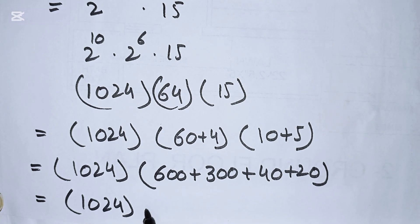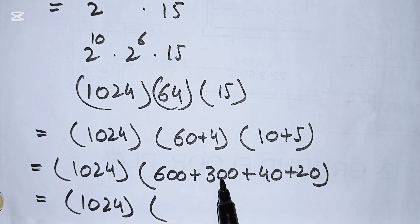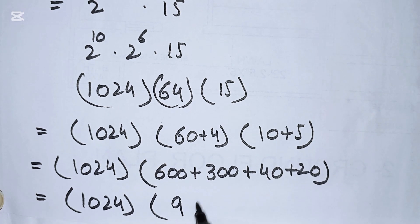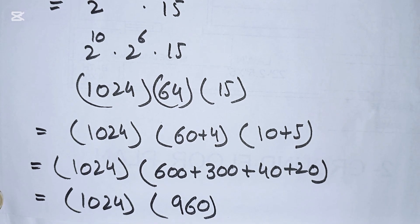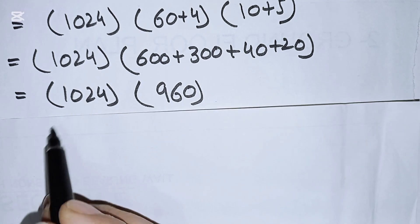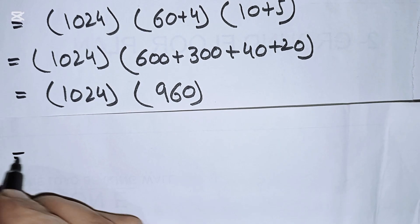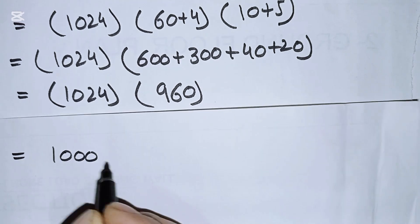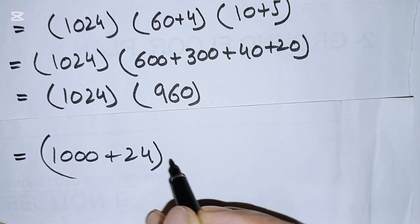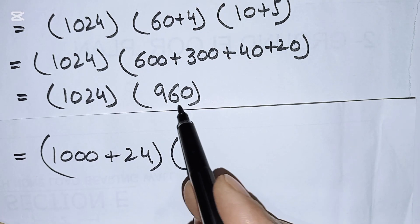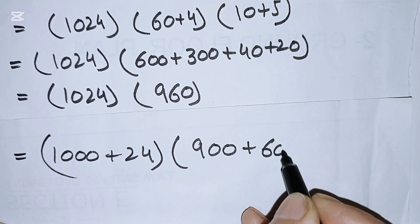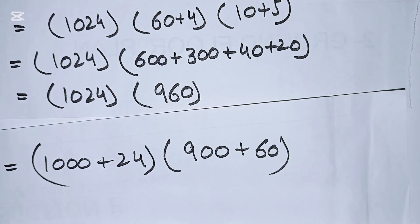So 1024 times the bracket: 600 plus 300 plus 40 plus 20 are added together to equal 960. Now 1024 can be written as 1000 plus 24, and 960 can be written as 900 plus 60.